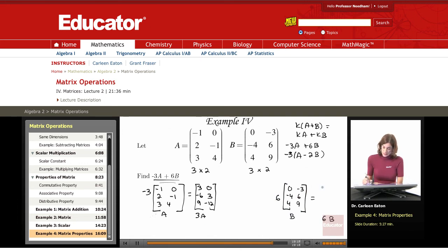So figuring this out, it's 6 times 0 is 0, 6 times negative 3 is negative 18, 6 times negative 4, negative 24, 6 times 6, 36, 6 times 4, 24, and 6 times 9, that's 54.